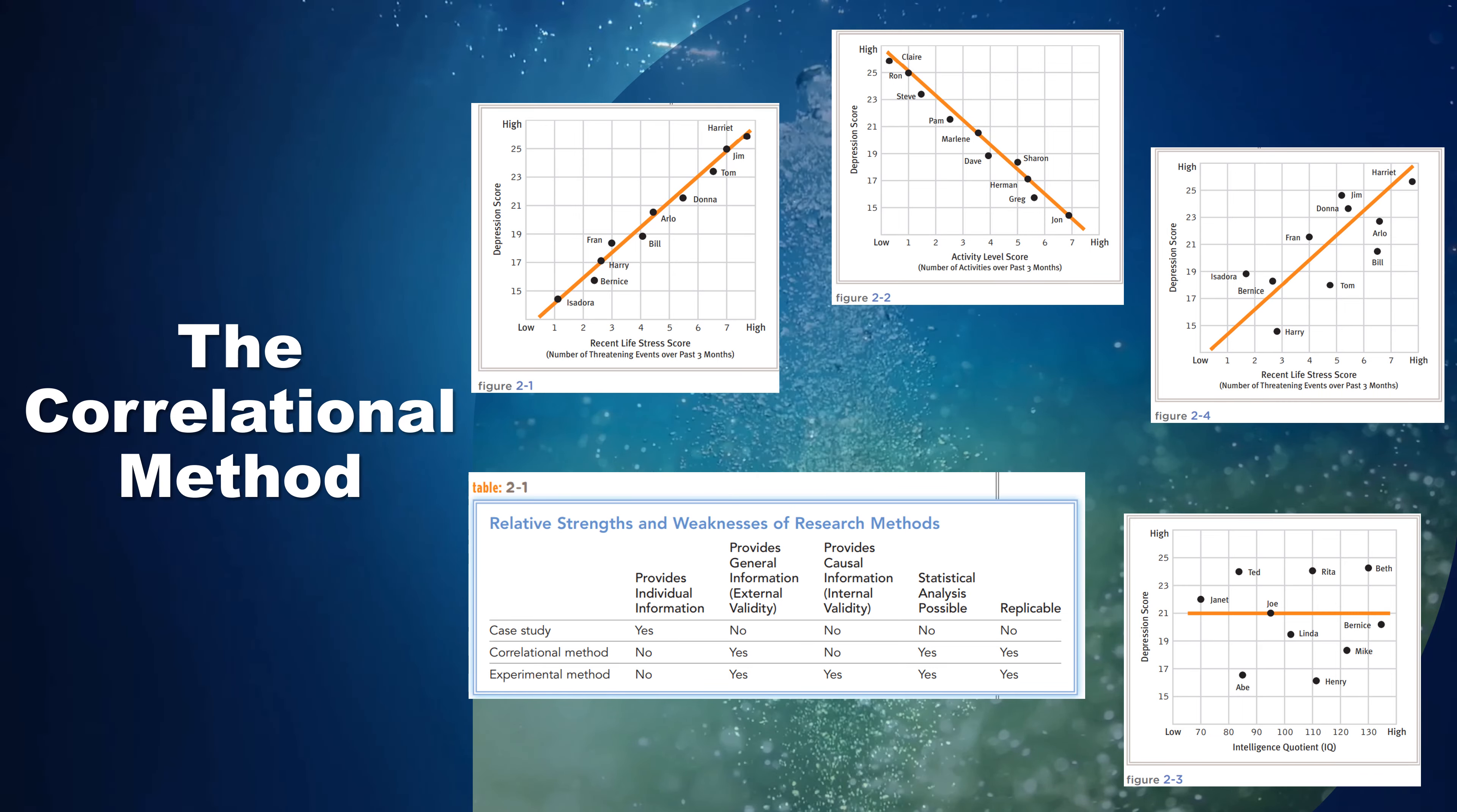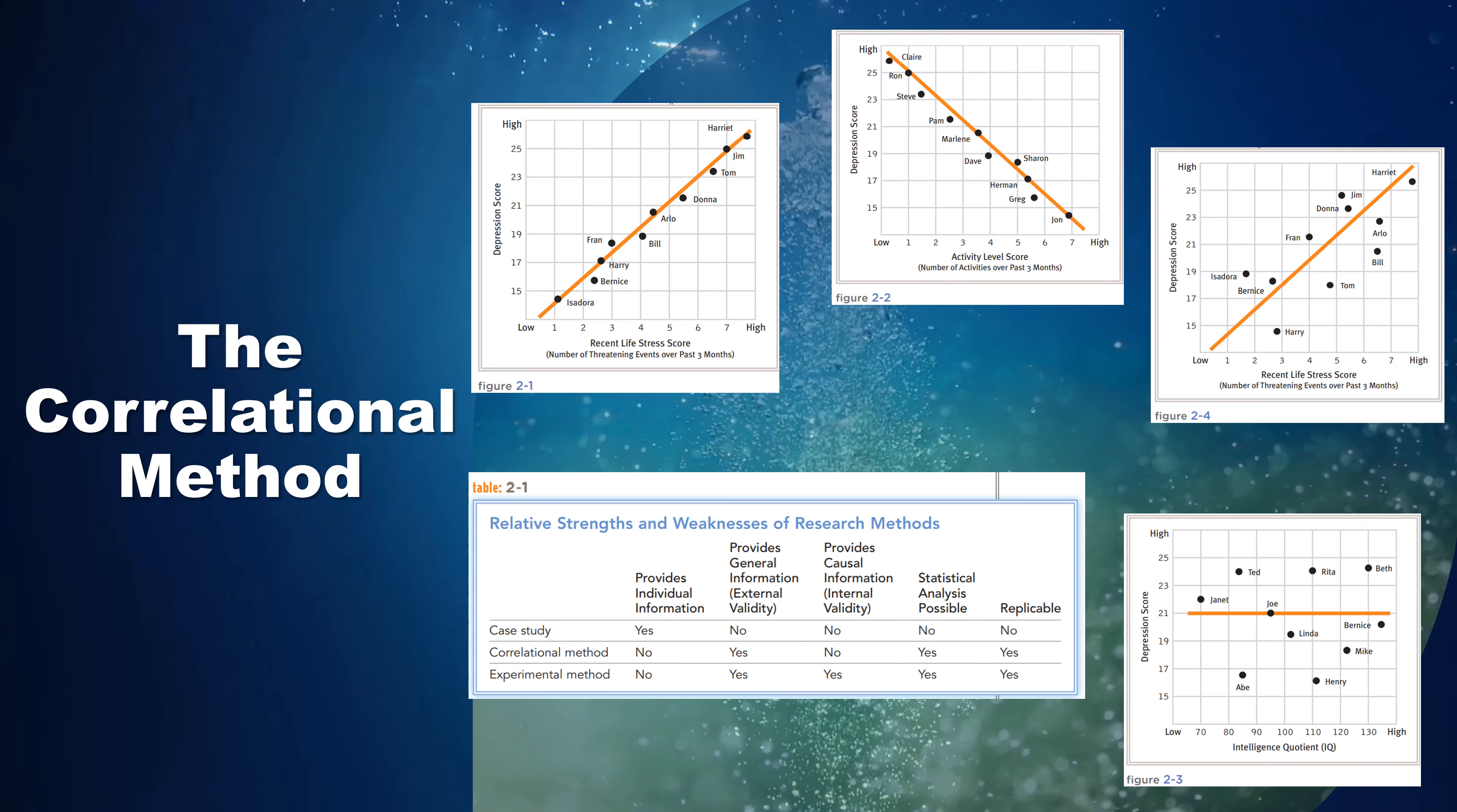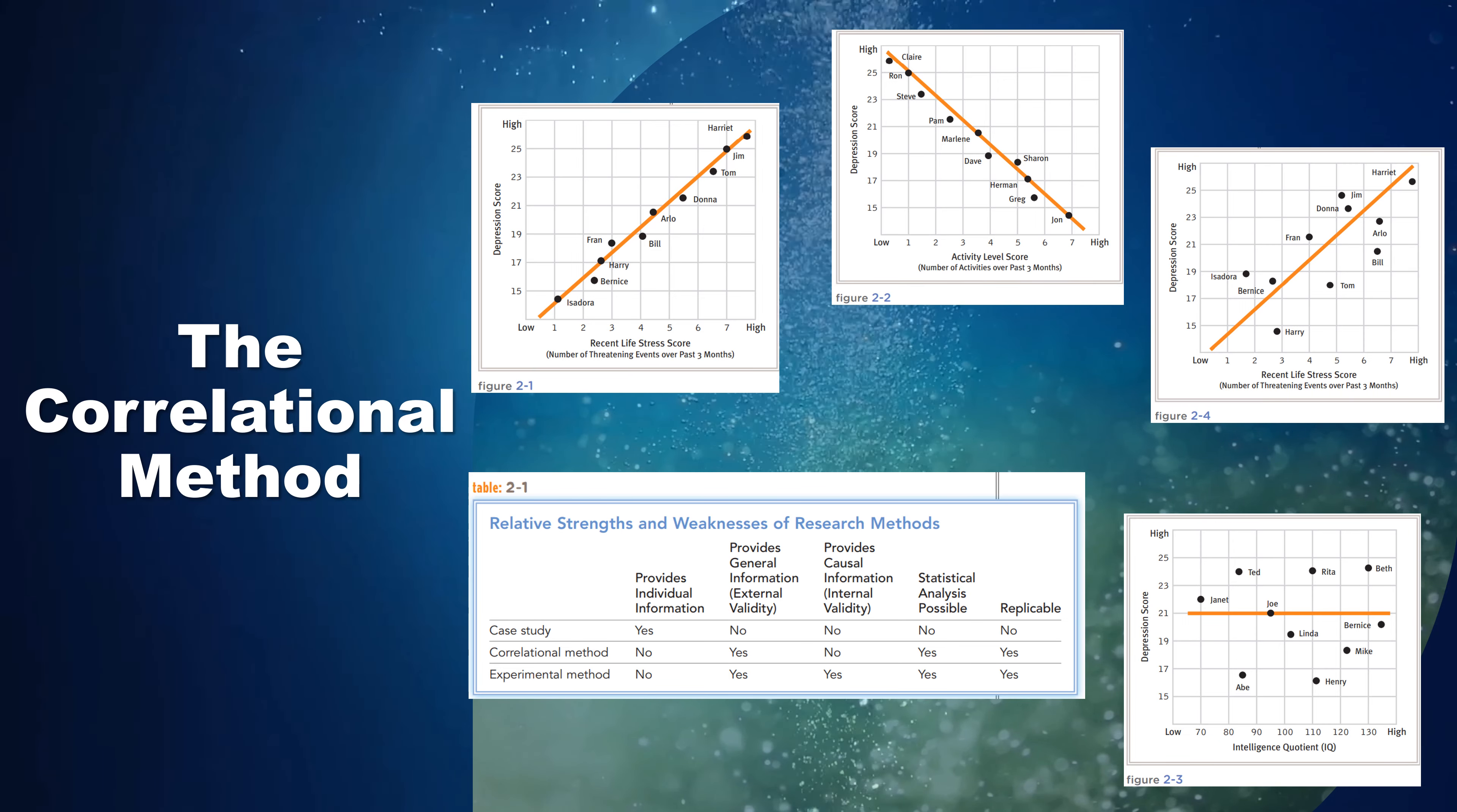Of course, in other instances, clinicians do need to know whether one variable causes another. Do parents' marital conflicts cause their children to be more anxious? Does job dissatisfaction lead to feelings of depression? Will a given treatment help people to cope more effectively in life? Questions about causality call for the experimental method, as you will see later.